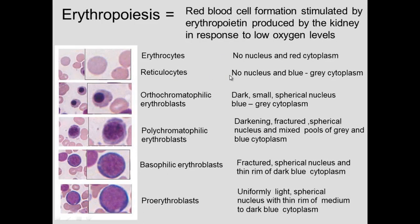The erythrocyte has no nucleus. The reticulocyte has no nucleus but has a gray cytoplasm with a little blue tint, the same as the orthochromatic erythroblast — but the orthochromatic one has a nucleus. As the nucleus gets larger — actually it starts out large and gets smaller with development. It's a little larger with the polychromatic and you can see the blue and pink cytoplasm. The basophilic erythroblast has blue cytoplasm and a spherical nucleus. So the nucleus gets smaller and then ultimately is eliminated.